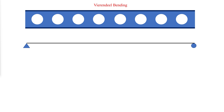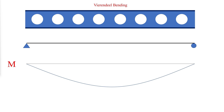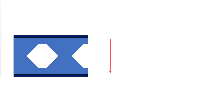Vierendeel bending is caused by the transfer of shear force across the openings in order to be consistent with the rate of change of bending moment along the beam. Vierendeel failure occurs by the formation of plastic hinges at four locations around the opening in regions of high shear. The global shear force passing through the opening creates a localized bending moment in the top and bottom tees, known as the Vierendeel moment.